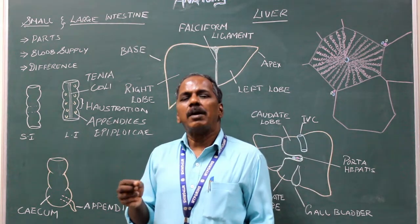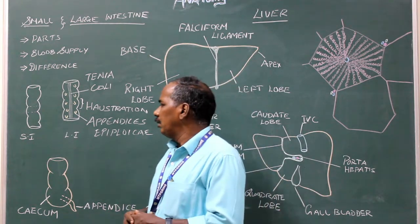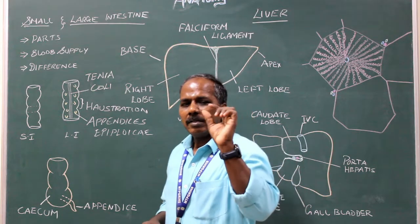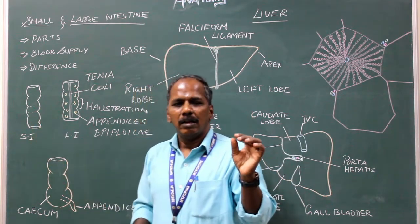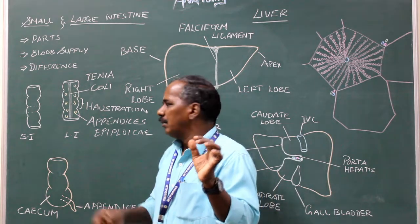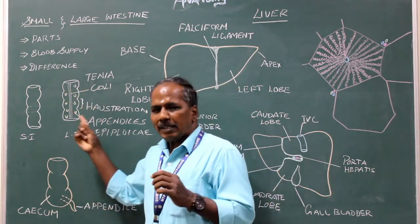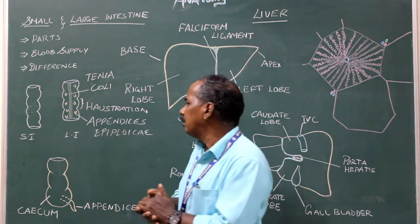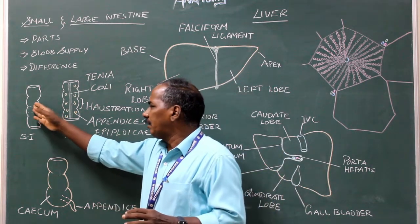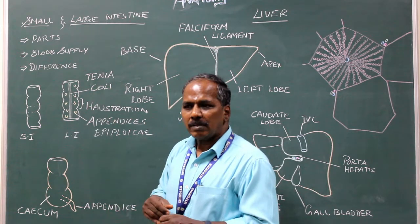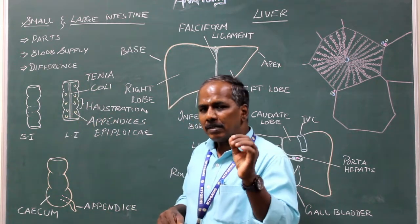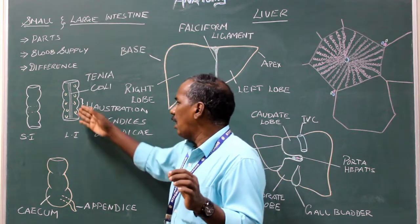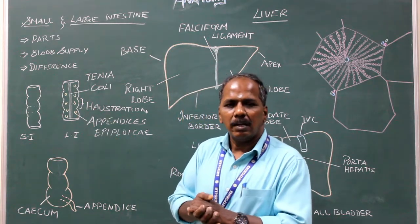Difference between small and large intestine. The small intestine is 6 meters long, narrow, and suspended except for the duodenum. The large intestine is 1.5 meters long, wider, and mostly fixed. There is presence of villi in the small intestine and absence of villi in the large intestine. Presence of Peyer's patches in the small intestine and absence in the large intestine.